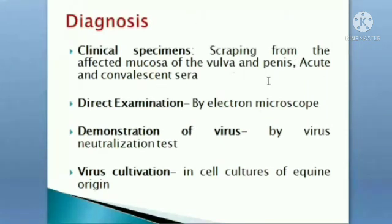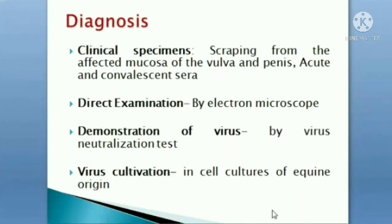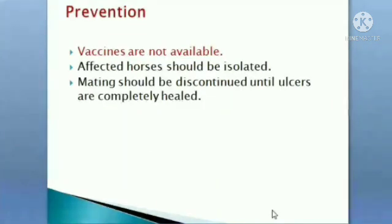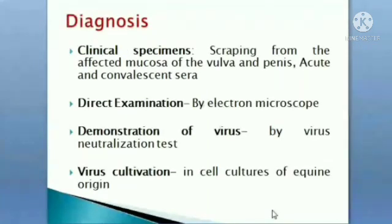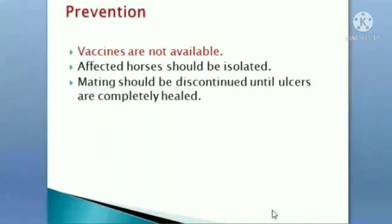For diagnosis, scrapings from the vulva and penis mucosa and acute and convalescent sera are collected. Direct examination by electron microscopy, virus neutralization test, and virus cultivation in cell cultures of equine origin are performed. No vaccines are available, so strict quarantine and biosafety must be maintained. Affected horses should be isolated and mating discontinued until ulcers are completely healed.